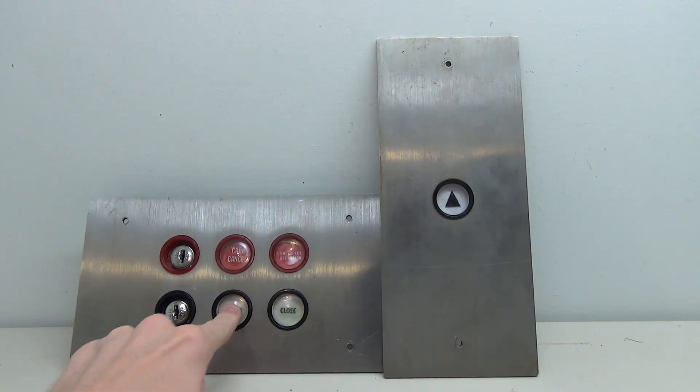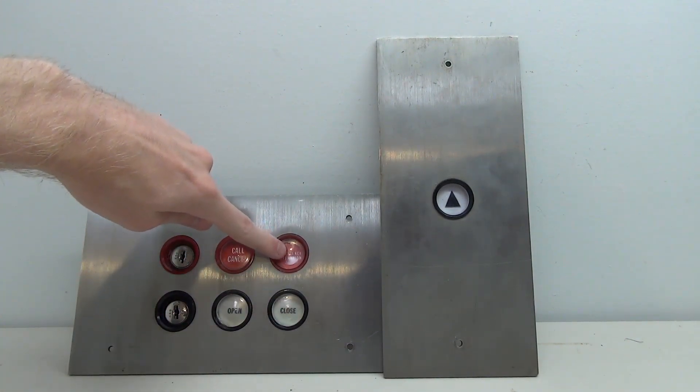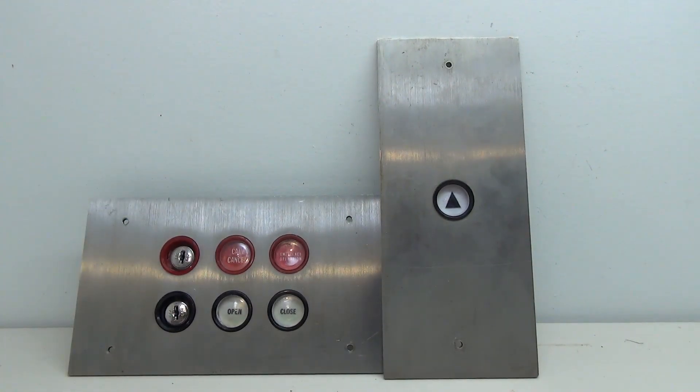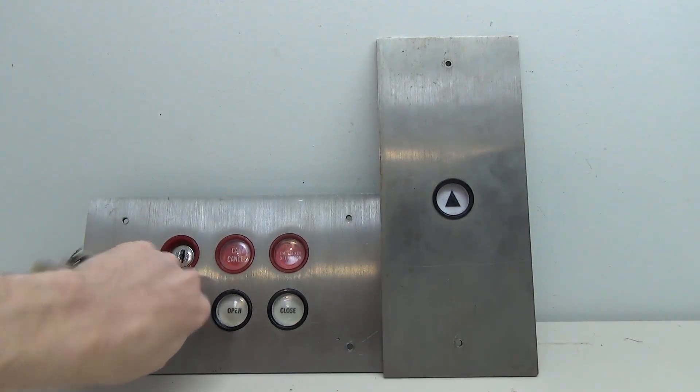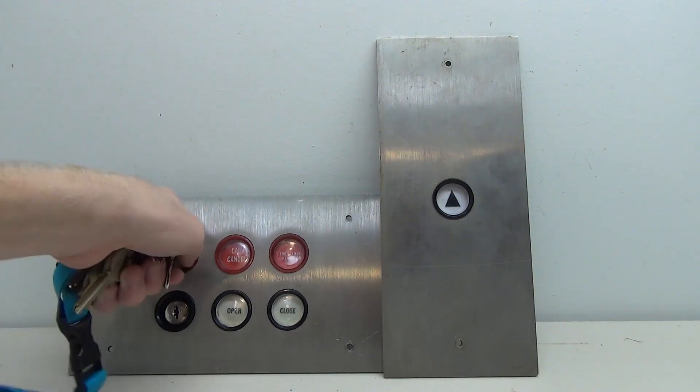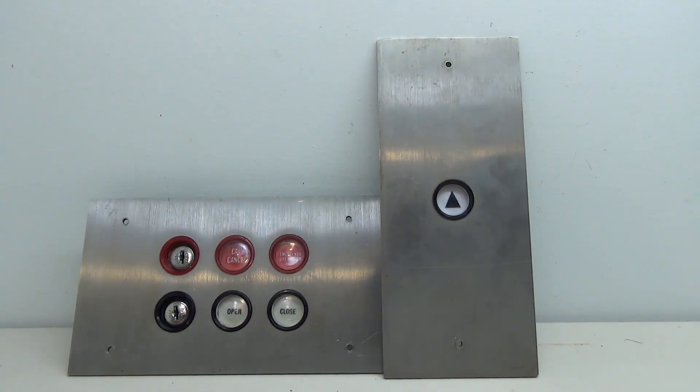So now we have our open and close buttons, the emergency operation light, call cancel, and we've got two key switches here which you can see, one has a red ring and one has a black ring. The only thing is the little text which goes around the key switch is missing. So they're just keys.